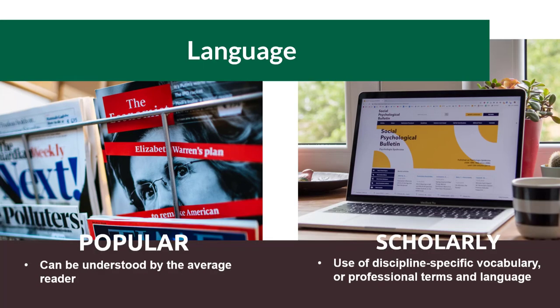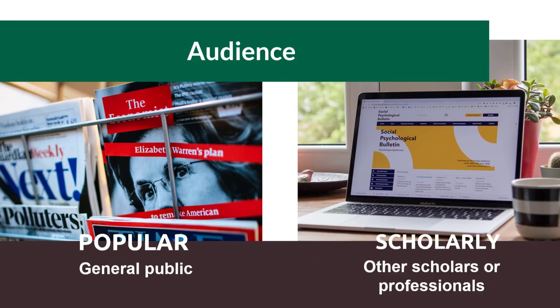What kind of language does the source use? Popular sources can be understood by the average reader, while scholarly sources use discipline-specific vocabulary or professional terms and language. Who is the intended audience? Popular sources are written for the general public, while scholarly sources are written primarily for scholars.